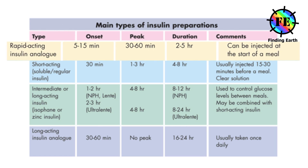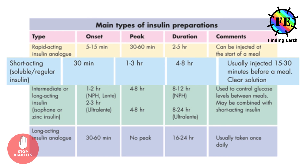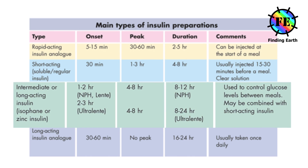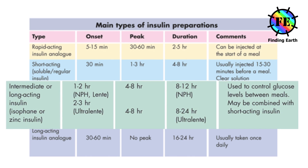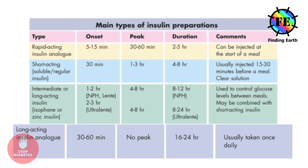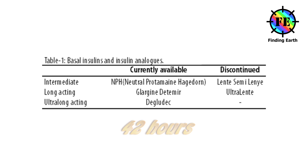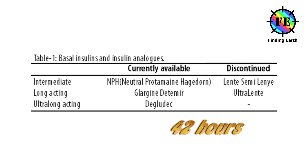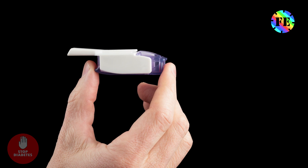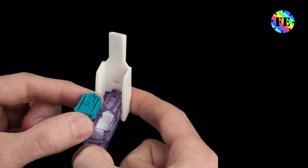Insulin comes in five types: rapid-acting, which takes effect within a few minutes and lasts two to four hours; regular or short-acting, effect within 30 minutes lasting three to six hours; intermediate-acting, effect in two to four hours lasting up to 18 hours; long-acting, effect in six to ten hours lasting beyond 24 hours; and ultra-long-acting, effect in 30 to 90 minutes lasting 22 hours.